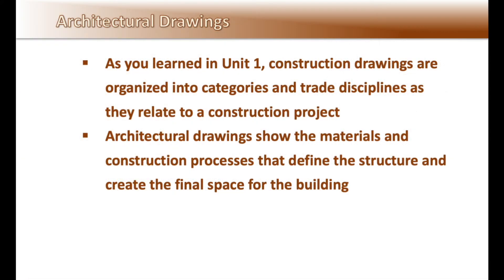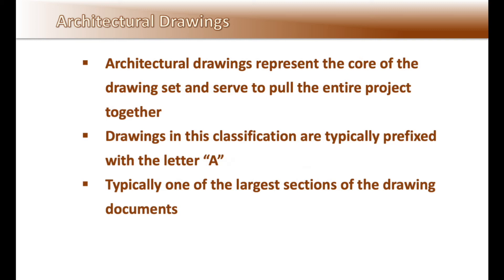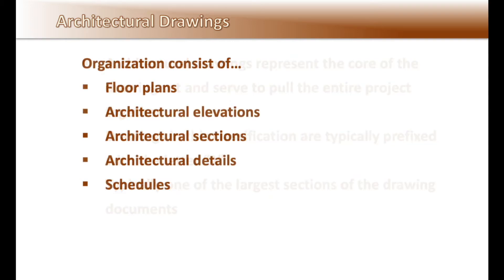As you learned in Unit 1, construction drawings are organized into categories and trade disciplines as they relate to the construction project. Architectural drawings show the materials and construction processes that define the structure and create the final space for the building. They represent the core of the drawing set and serve to pull the entire project together. Drawings in this classification are typically prefixed with the letter A, and are typically one of the largest sections in the drawing documents. The organization consists of floor plans, architectural elevations, architectural sections, architectural details, and schedules.